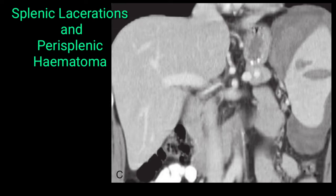This CT scan image confirms the previous case. Within the spleen you can see a hypodense oval area within the splenic parenchyma, along with another round lesion. This confirms intra-splenic laceration surrounded by perisplenic hematoma — a well-defined hypodense area surrounding the splenic capsule representing perisplenic hematoma and splenic laceration.